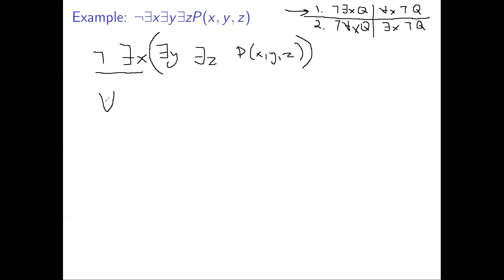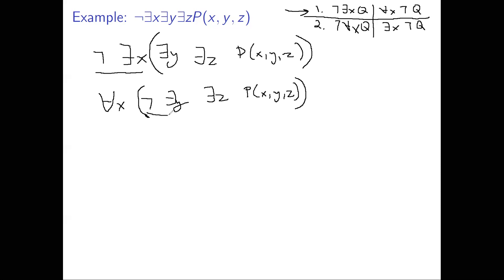We have not-exists-x in front, so we use rule one — it becomes for-all-x not. Then on the next line, the for-all-x is done. We do have a negation in front of the exists-y, so we deal with that. Rule one tells us not-exists-y is equivalent to for-all-y not. So we get: for-all-x, for-all-y, not, exists-z, P(x,y,z).